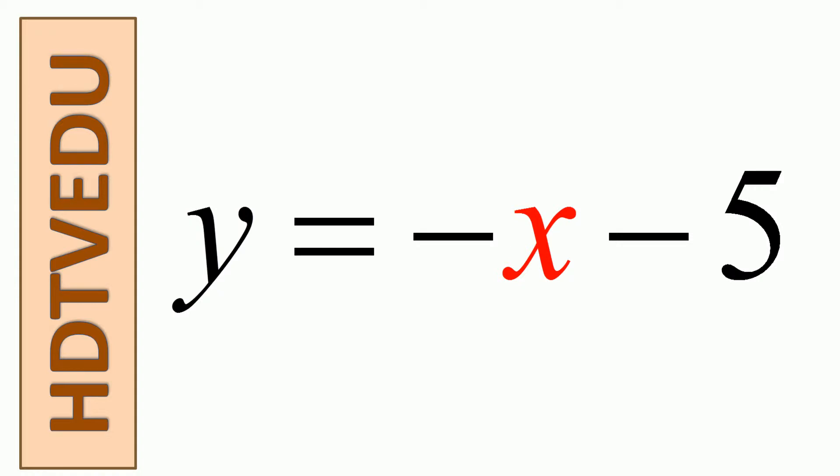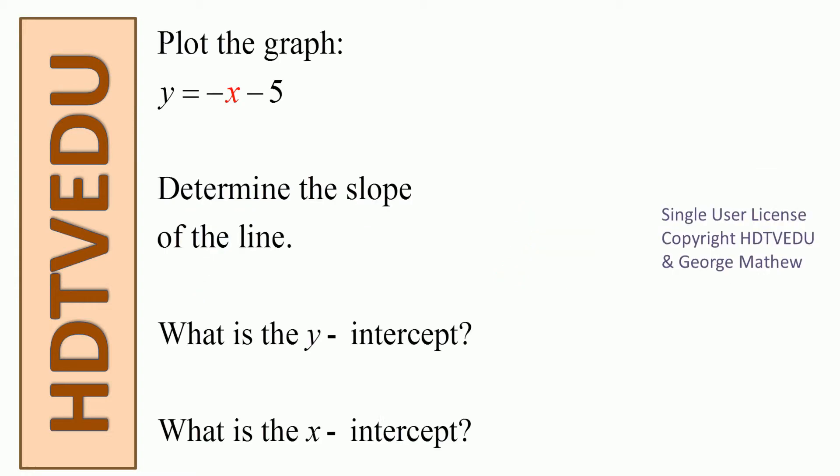y equals negative x minus 5. Plot the graph of the line y equals negative x minus 5. Determine the slope of the line. What is the y-intercept? What is the x-intercept?